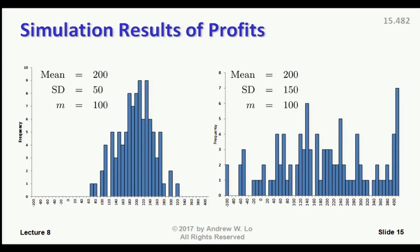Now let's go to the last part of the question: what happens if the standard deviation is not $50 million but $150 million? The net profit next year now looks quite different. I simulated 100 trials with a standard deviation of $150 million and plotted a histogram — it looks like a mess, much more widely spread out. I've used the same scale for both so you can compare apples to apples.